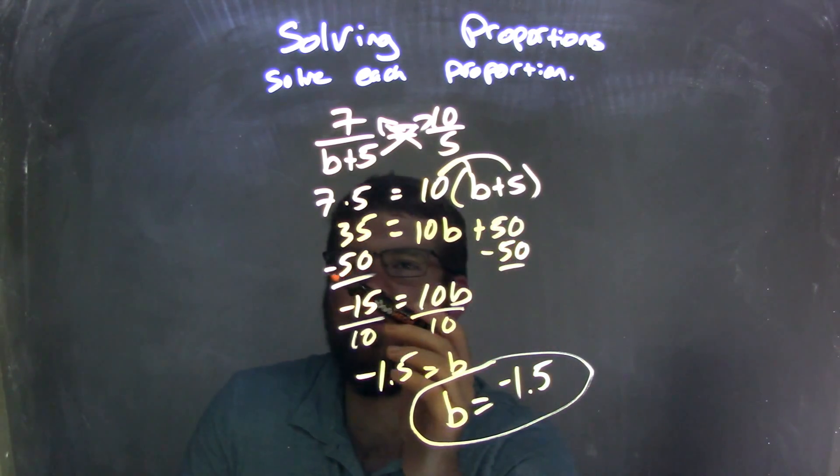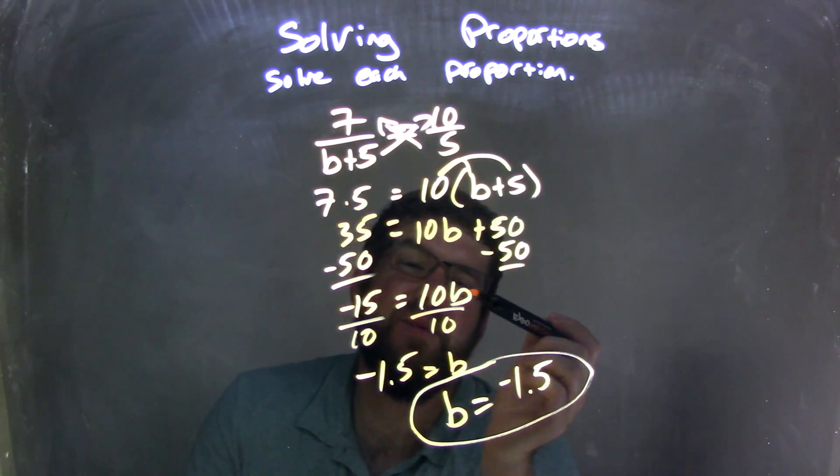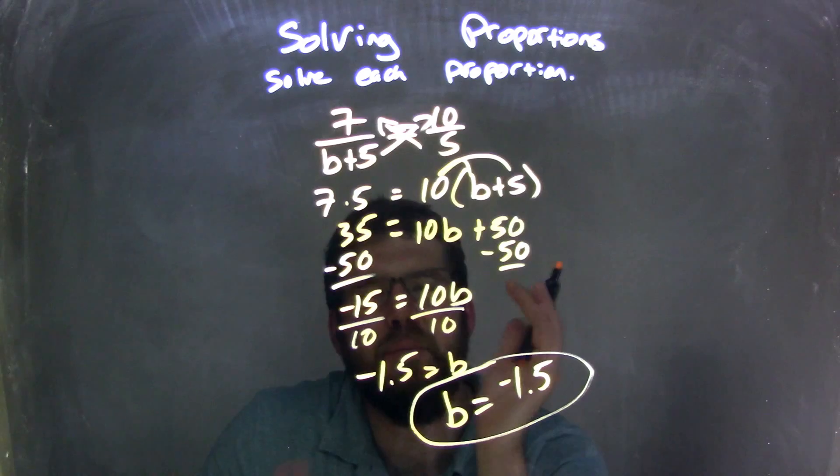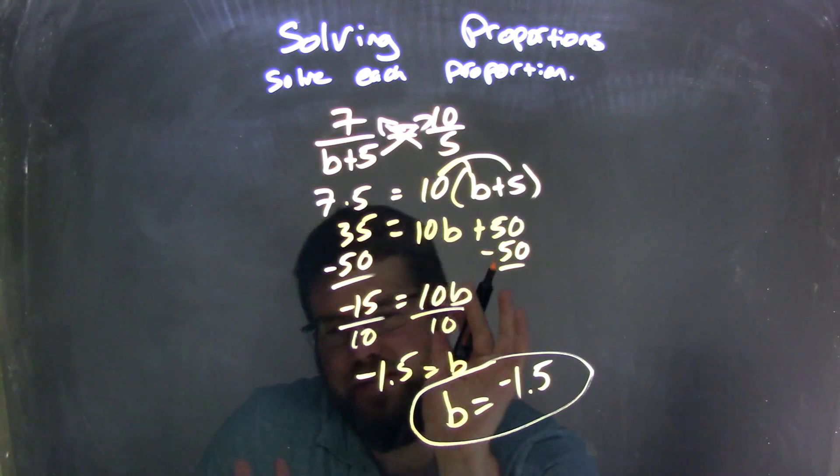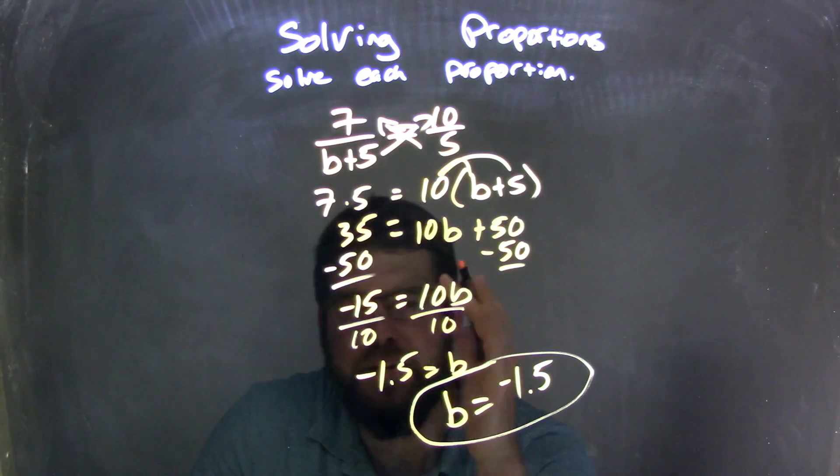I subtracted 50 from both sides, giving me 35 minus 50, which is negative 15, equals 10b. I then divided by 10 on both sides. I'm pretty good at dividing by 10—it's kind of like just moving the decimal place over, but I don't know if your teacher likes that trick.